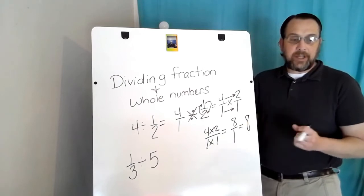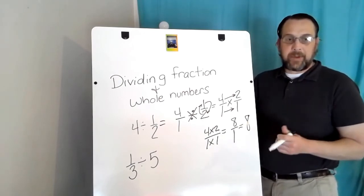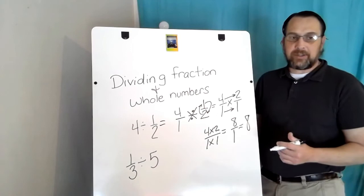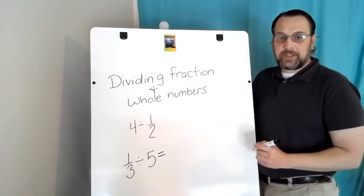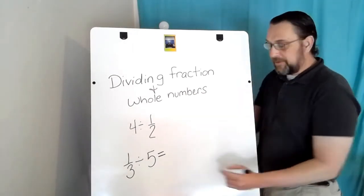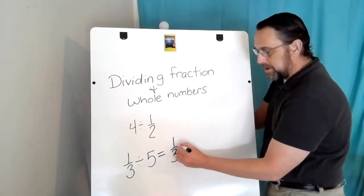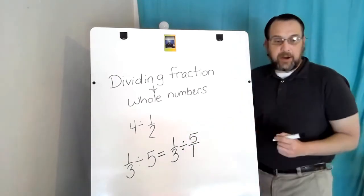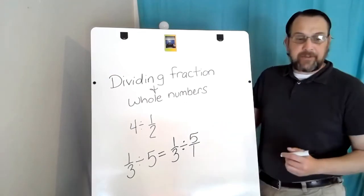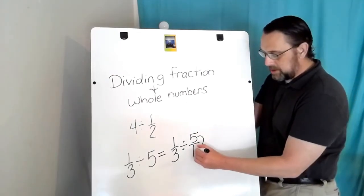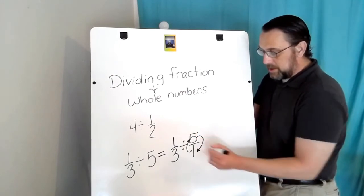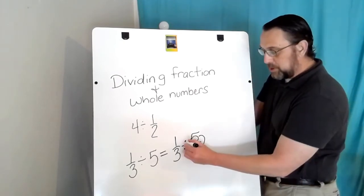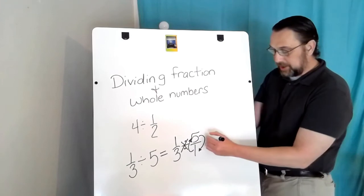Now let's take a look at how we're going to solve the second type: one third divided by five. Remember, the expression starts with a fraction, therefore my answer will be in fraction form. The first thing I will have to do is turn the five into a fraction, so I get one third divided by five over one. I will do the flip and switch — flip the second fraction, always the second fraction — and that is called the reciprocal.